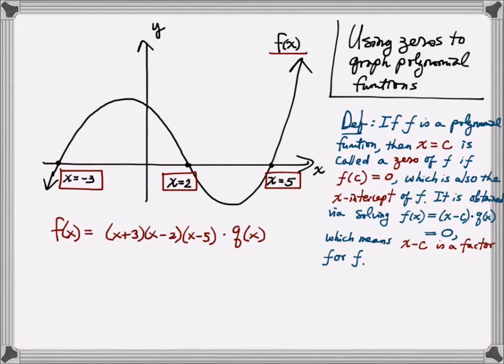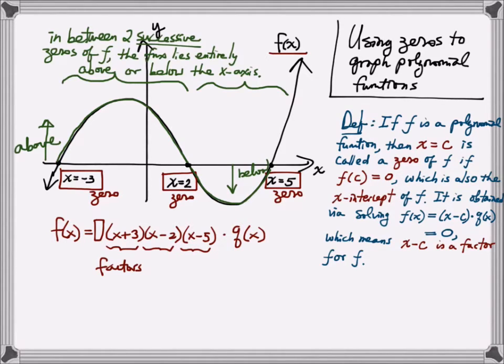It also could potentially have a different constant that sits in front. A very interesting thing to observe here is that the graph between two successive zeros of f lies entirely above or below the x-axis. For example, in between the zero negative 3 and 2, we notice that the graph lies entirely above the x-axis. Between the two successive zeros of 2 and 5, the graph lies entirely below the x-axis.